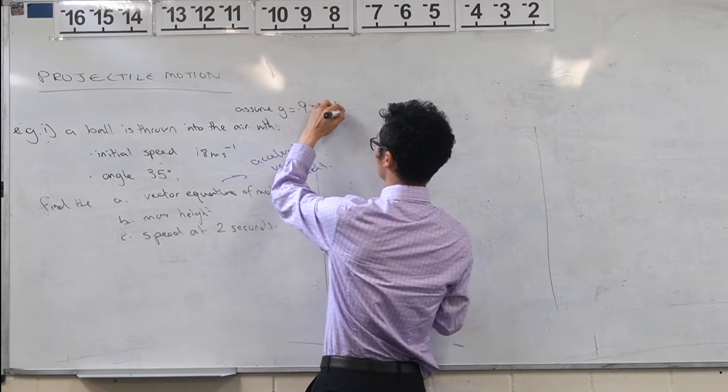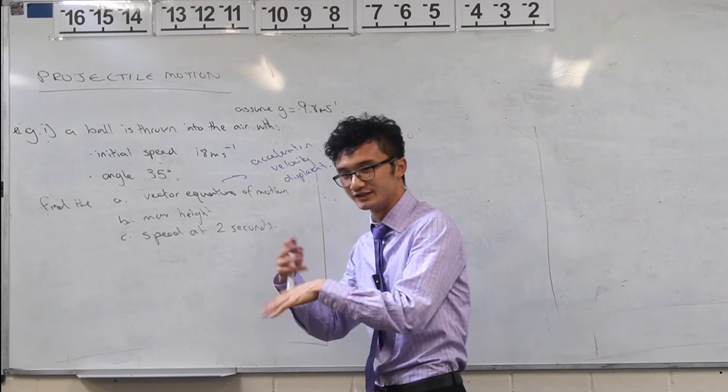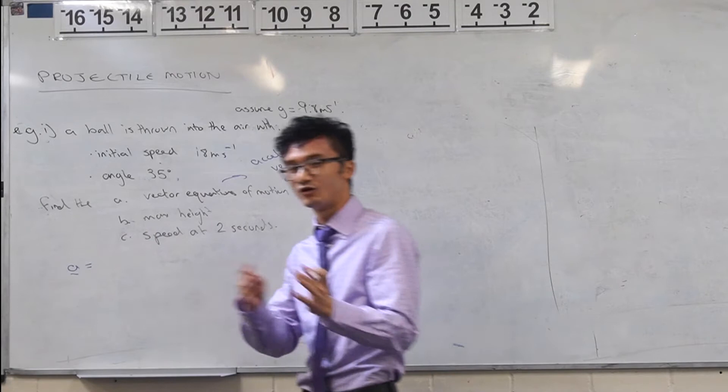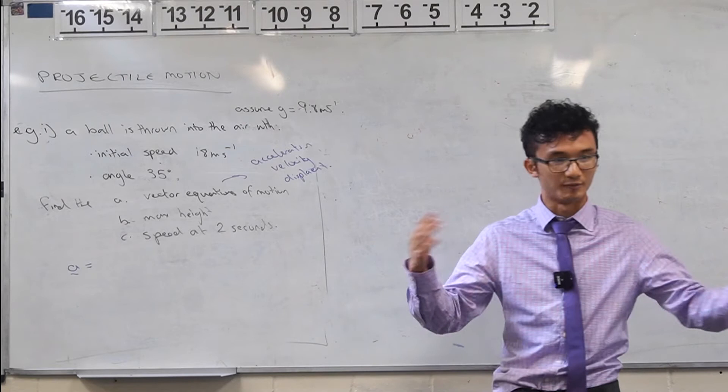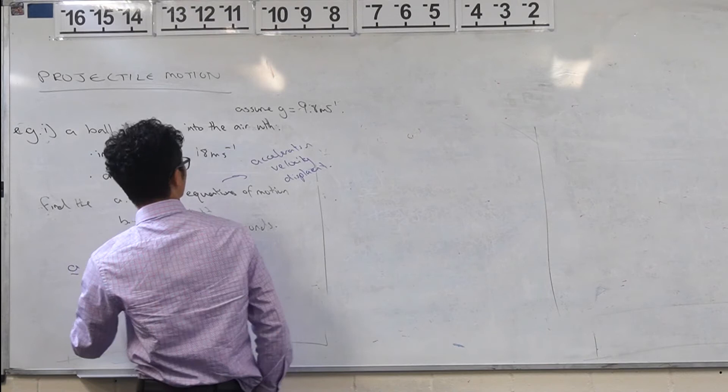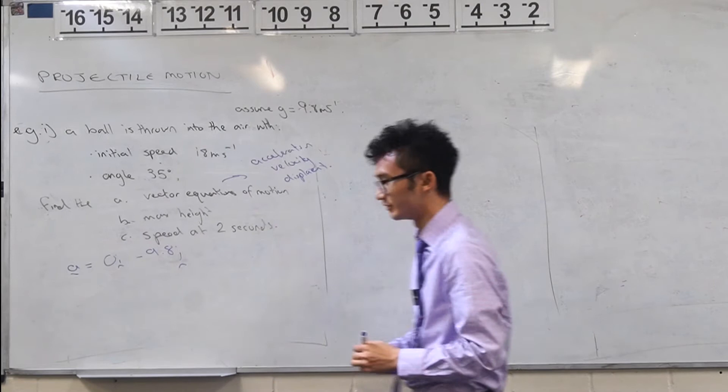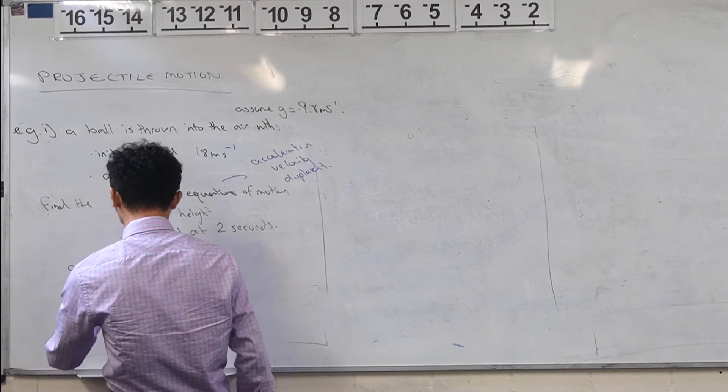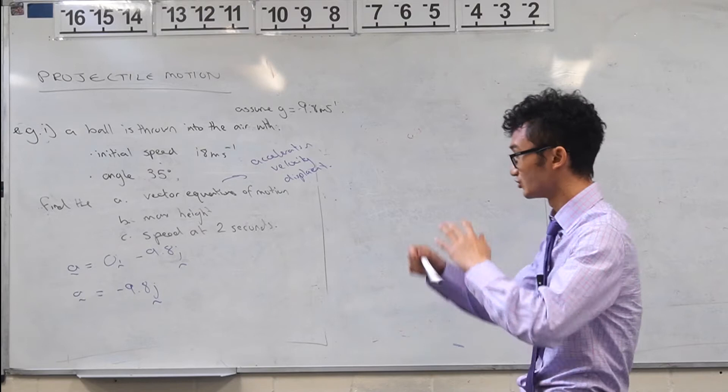Yeah once we have that then I can start building this vector equation. So remember a vector equation technically has two parts. It's got a horizontal and vertical but the horizontal we just assume is zero because that's the part where we ignore air resistance and stuff. So it's going to be 0i minus 9.8j. So this is our gravity. So remember it's negative g so a is going to be equal to negative 9.8j. All right so that's your kind of first equation of motion. That's how you sort of start with this building block.